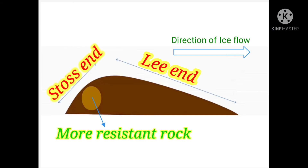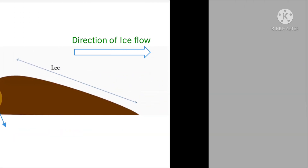The glacier side or upstream side of a drumlin is known as the Stoss End, which is always blunt, high, and steep. The downstream side of a drumlin is known as the Lee End, which is always low and gentle.